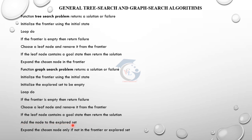Add the node to the explored set. First, the explored set is empty. We need to visit the state — we need the explored set to track visited states. Expand the chosen node only if it is not already in the frontier or explored set. If we want to expand toward the final goal state, we expand the state accordingly.